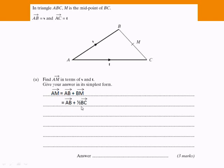Instead of BM, I've written a half BC, because from B to M is a half of from B to C. We know that because it says in the question M is the midpoint of BC. Why have I done that? So that I can try and write it with S's and T's, because we know that from A to B is called S.